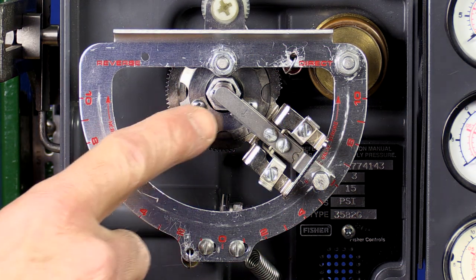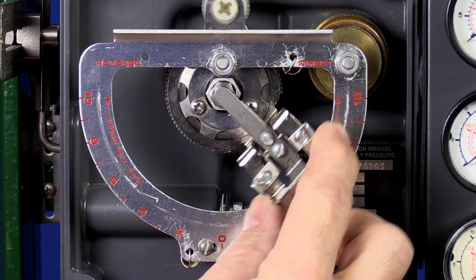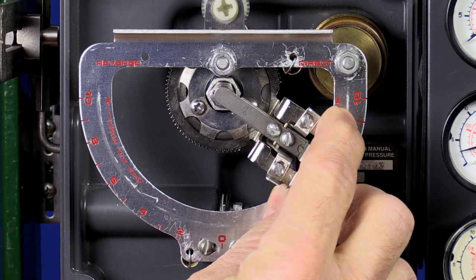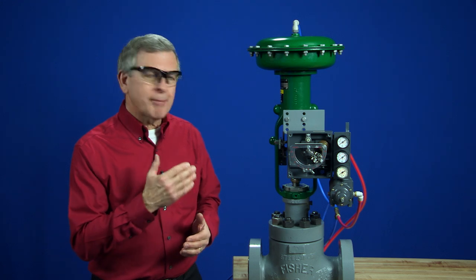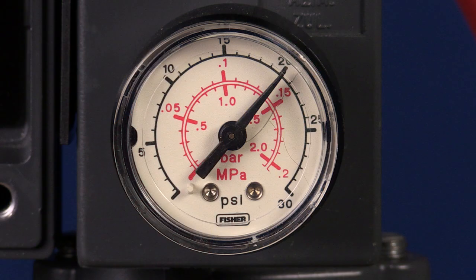The zero adjustment is done with the nozzle, and the span is adjusted by moving the flapper assembly along the summing beam. We have our air supply plumbed to the positioner and can see on the supply gauge the regulator is set to, in this case, 20 psi.